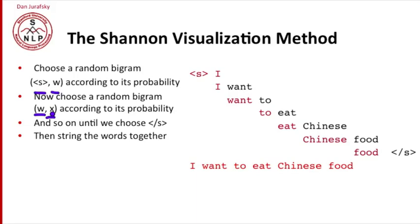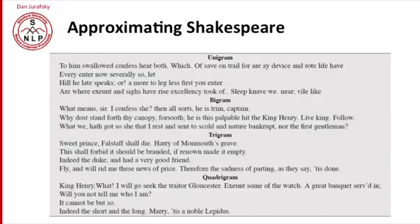So the Shannon visualization method can show us a lot of things about the n-grams that we've built. For example, here's a grammar language model trained on Shakespeare and generating random sentences. So here's some unigram sentences: Every enter now severally so let. Hill he late speaks. Or. Not very good sentences.